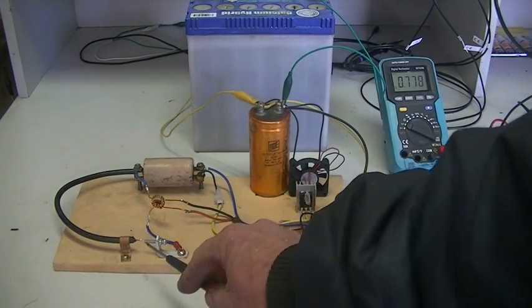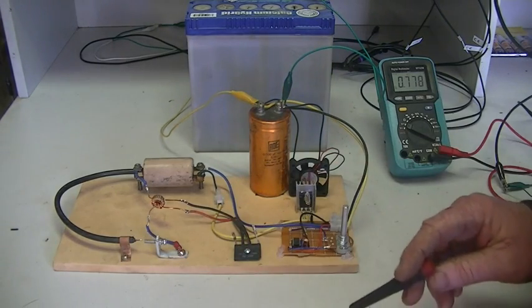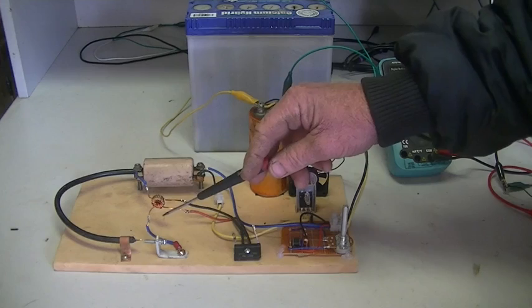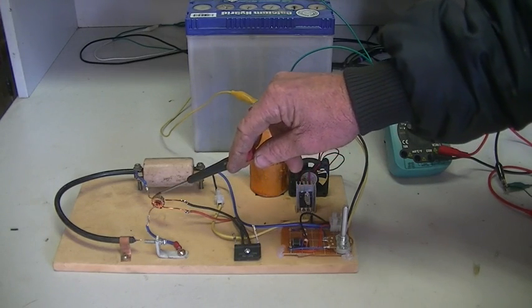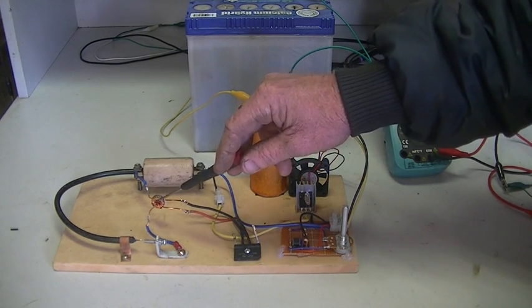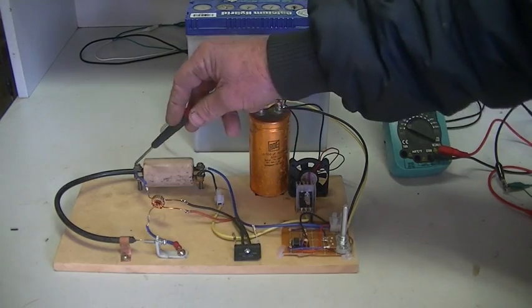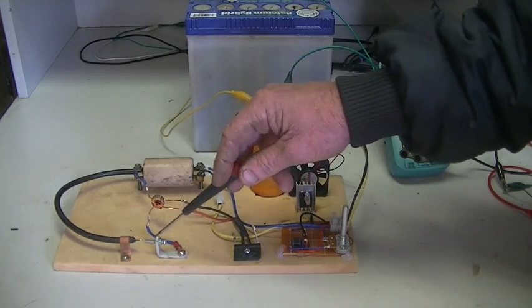Over here we have our adjustable spark gap. You'll see I have put a small toroid with 22 windings around it, and that is in between the line from the ground of the coil to our spark gap.